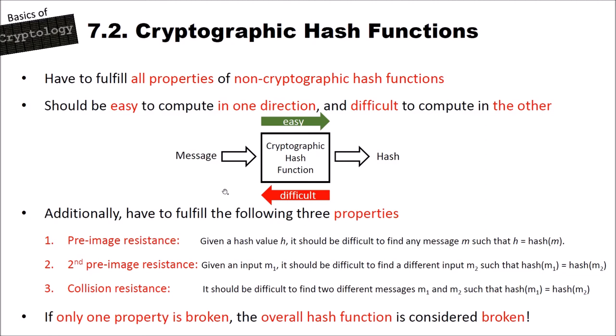Collision resistance is easier for an attacker because he can choose both messages m1 and m2 — there is no fixed m1. Even that has to be impossible: you cannot find two messages m1 and m2 whose hashes are equal, because that would be a collision. If only one of these three properties is broken — you can find the pre-image, or a second pre-image, or a collision — then the complete hash function is considered broken and should not be used anymore.